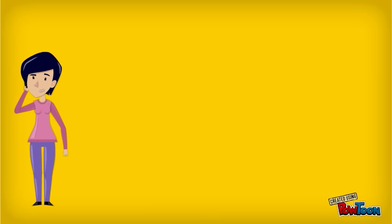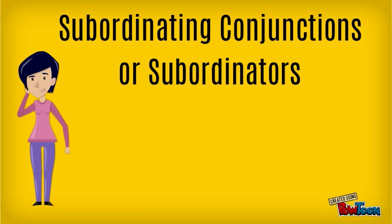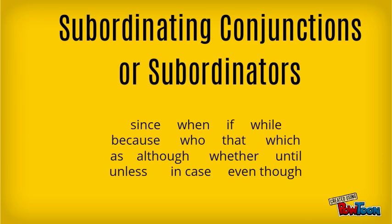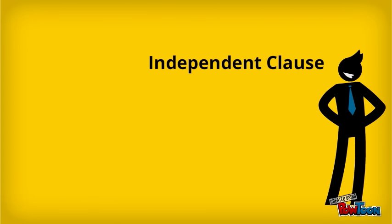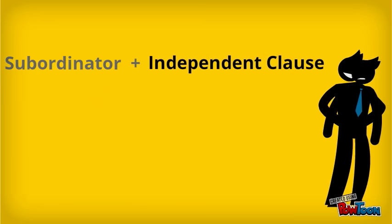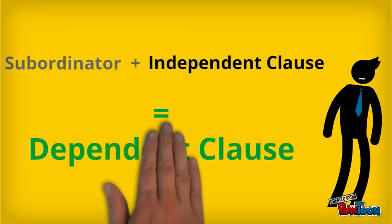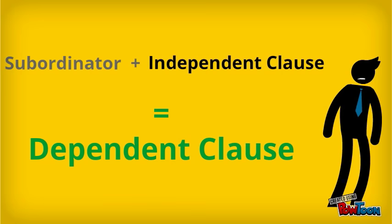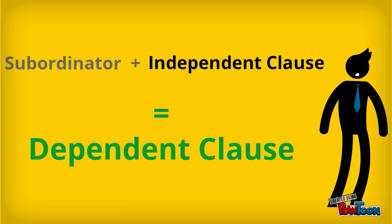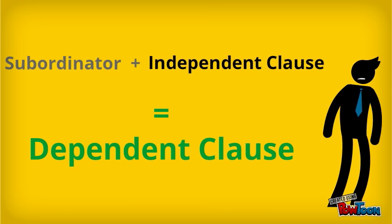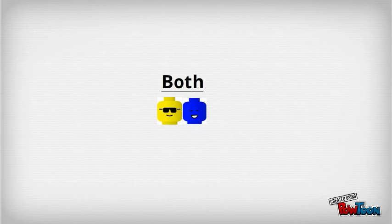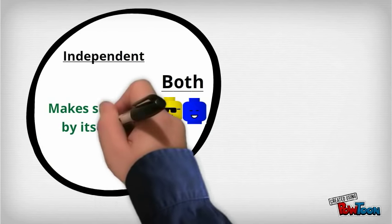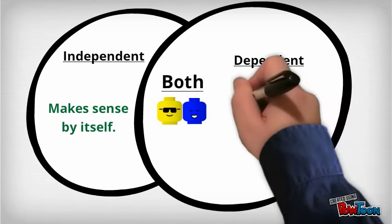The words that I added at the beginning of the clauses are called subordinating conjunctions, or subordinators. Here are some examples. These subordinators weaken the independent clause so that it can't stand alone anymore — it needs more support to make sense and be a complete thought. So, subordinators turn an independent clause into a dependent clause. They both still have a subject and verb team, but the independent makes sense by itself, while the dependent needs more information.